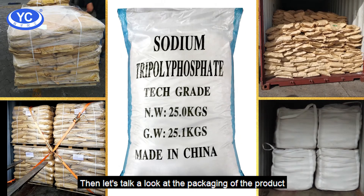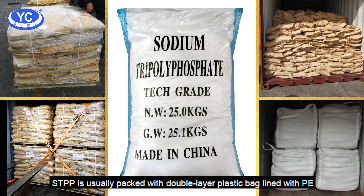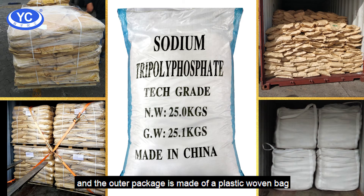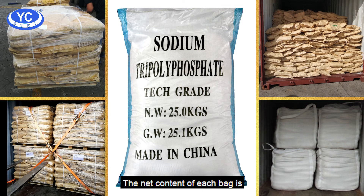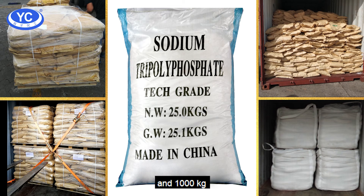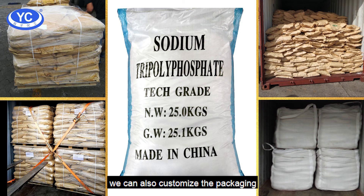Let's take a look at the packaging of the products. STPP is usually packed with double-layer bags lined with PE, and the outer packaging is made of plastic woven bags. The net content of each bag is 25 kg, 500 kg, and 1000 kg. Of course, we can also customize the packaging according to the customer's requirements.